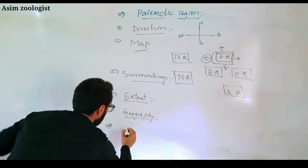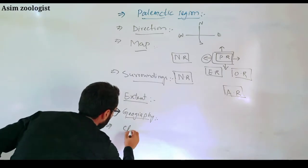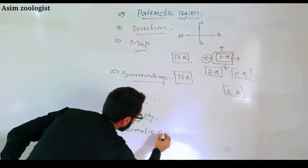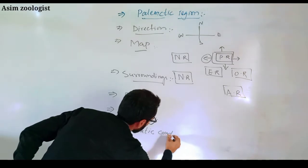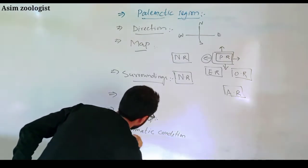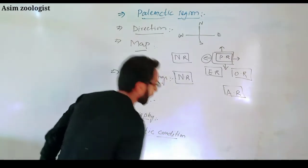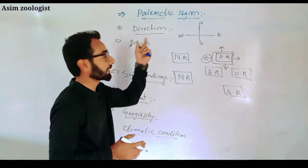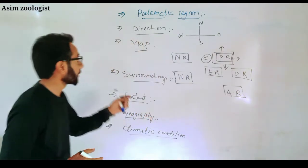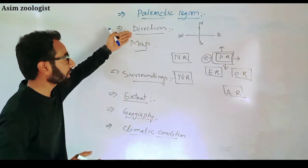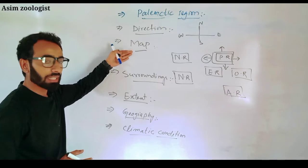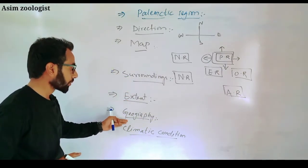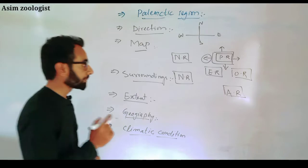After geography, you have to discuss the climatic conditions — what type of climatic conditions are present in that particular region. So step by step: first direction, second map, third surroundings, fourth extent, fifth geography, and sixth climatic condition.